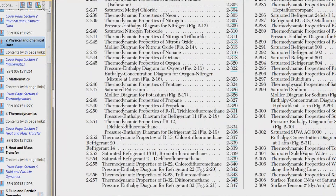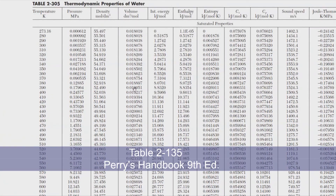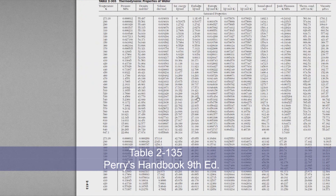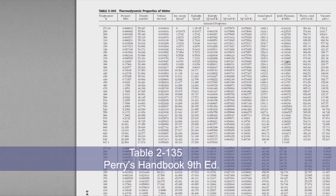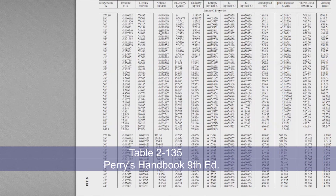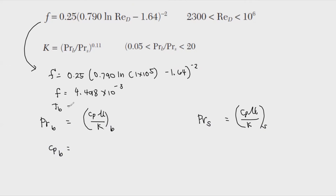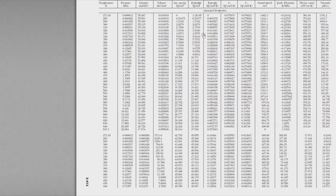Interpolating between 300 and 310 K for the bulk condition gives us the properties at 305.37 K. Similarly, interpolating between 320 and 330 K for the surface condition gives properties at 322.04 K. These interpolated values will be used to compute the Prandtl numbers.